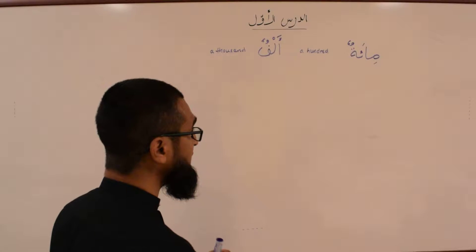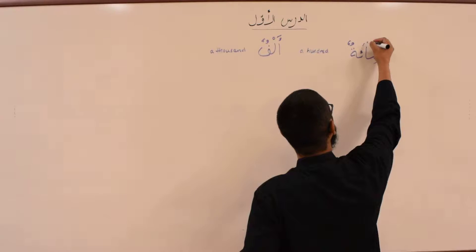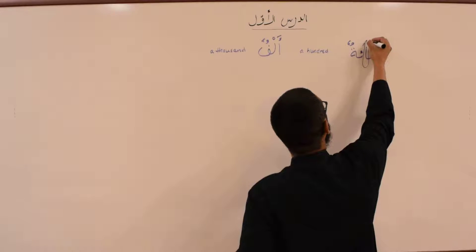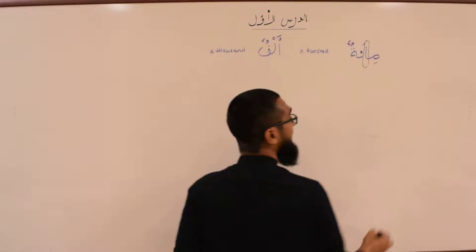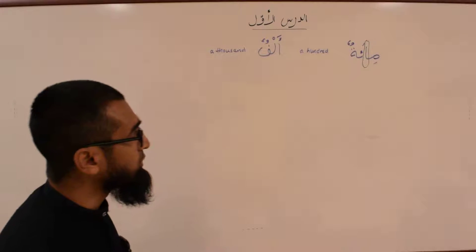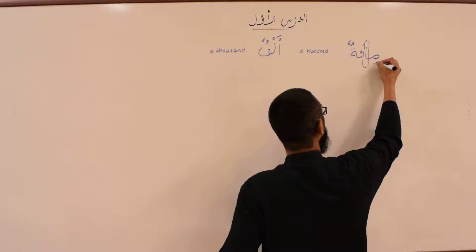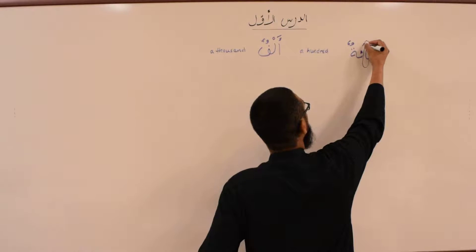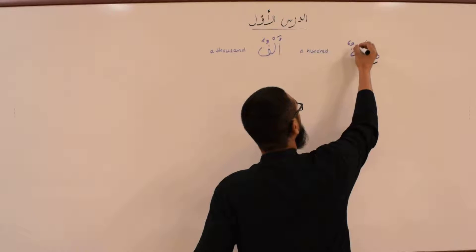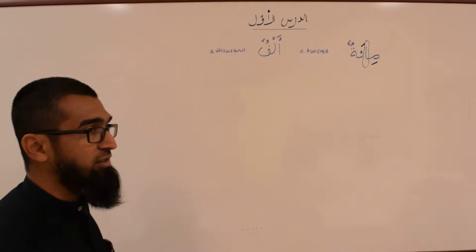What you need to know about Mi'atun is that the alif is not pronounced. It's not pronounced, but it's written. So all you pronounce is Mi'atun — the Hamza, Mi'atun — and the Ta Marbuta, Mi'atun, which is a hundred.